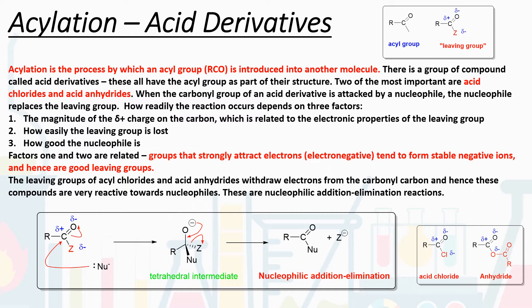The rate at which a nucleophile attacks our acyl group is dependent on three factors. The first is the magnitude of the delta positive charge on the carbon, which is related to the electronic properties of the leaving group. The second is how readily that leaving group can be lost — if it can be lost more easily, the reaction will be faster. The third is how good the nucleophile is: a stronger nucleophile that more readily donates an electron pair gives a faster rate of reaction.